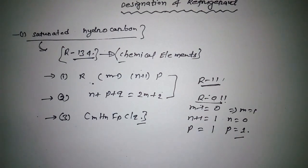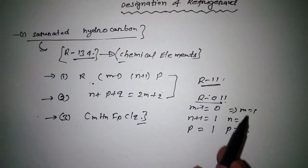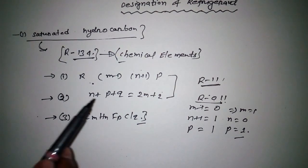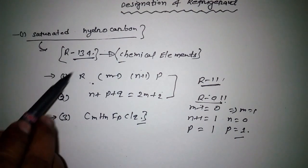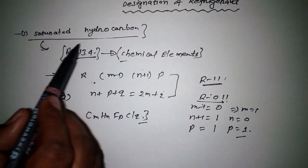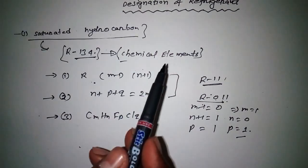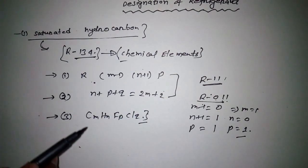But we don't know the value of q yet. To find q, we put all values into the equation. This is why we need to know all three formulas for converting saturated hydrocarbon refrigerant names to chemical elements.